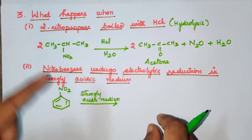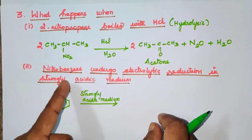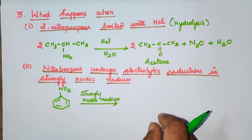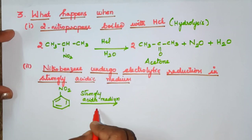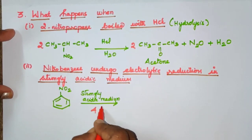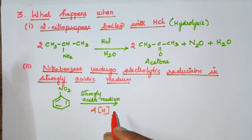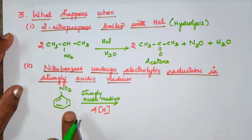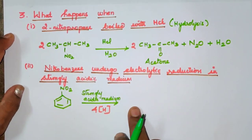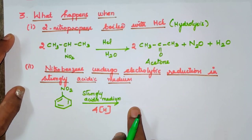In strongly acidic medium, 4 hydrogen atoms are involved in the reduction. The first product formed is phenylhydroxylamine.